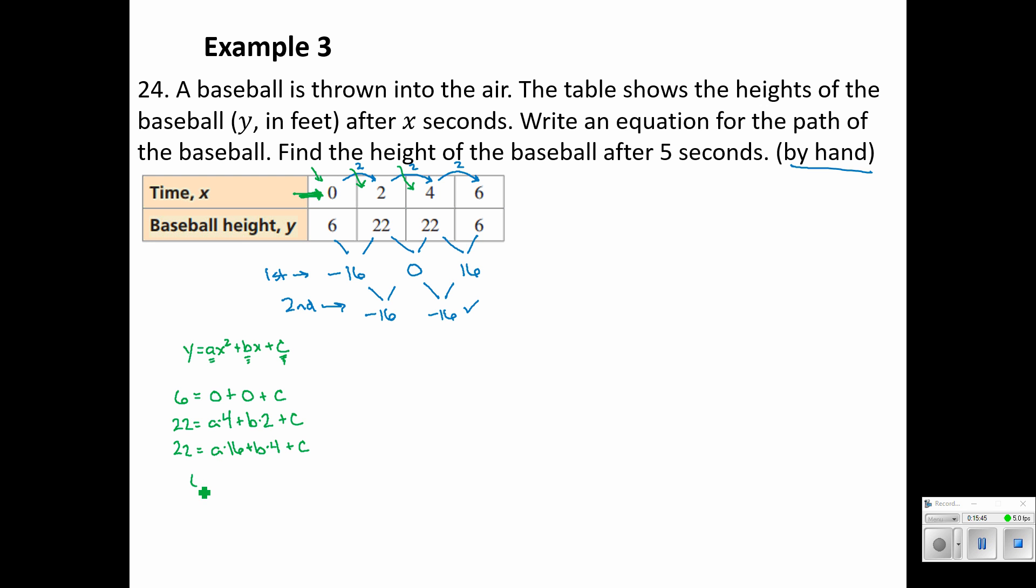So now we've got this three equation, three unknown system. We've got 6 equals c. We've got 22 equals 4a plus 2b plus c. And we've got 22 equals 16a plus 4b plus c. And since we had that one point that had an input of zero, it might, well, chances are it won't come out this clean every time. But man, that's nice because we can use substitution to set up an equation that is two, or set up a system that is two equations with two unknowns.